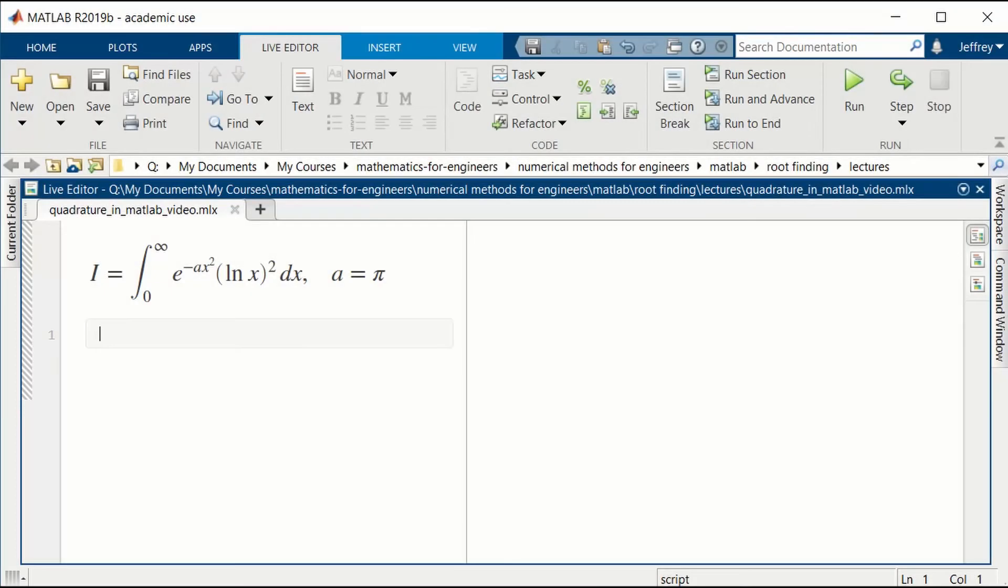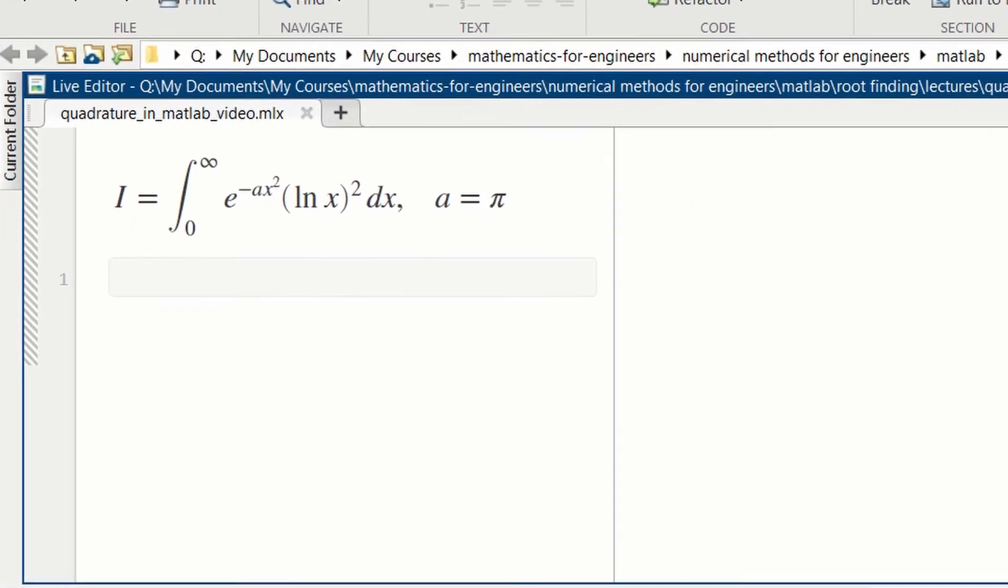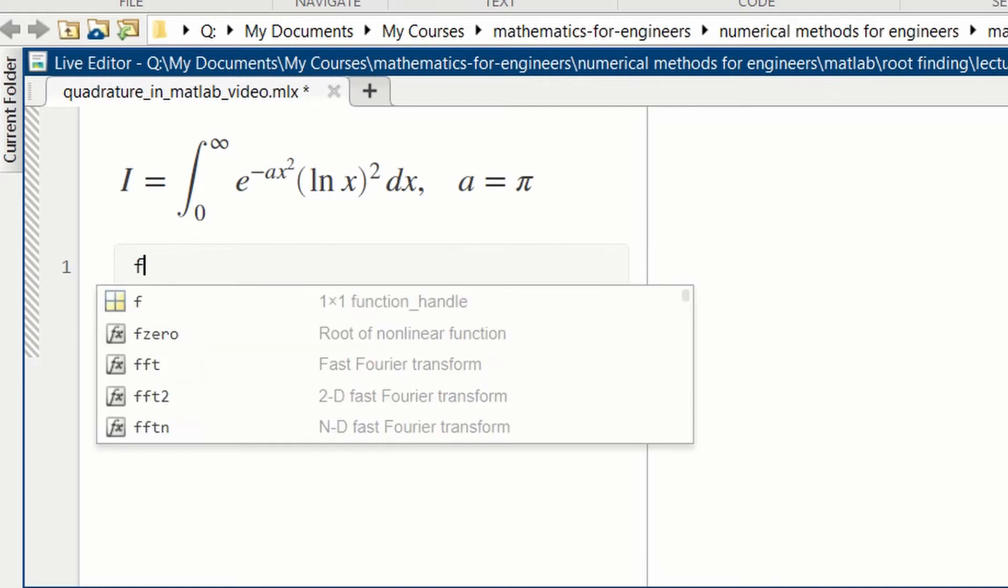Let's use MATLAB to compute this integral: the integral from 0 to infinity e^(-ax²)(ln x)² dx. a is a parameter, and here we'll set the parameter a equal to pi. So we need to first define the integrand. Let's call f the integrand.